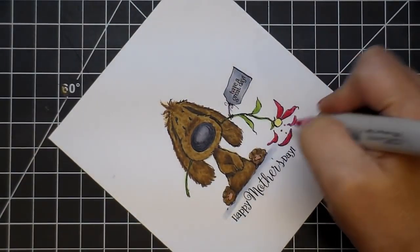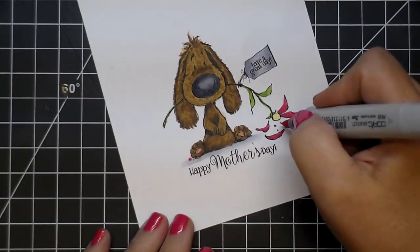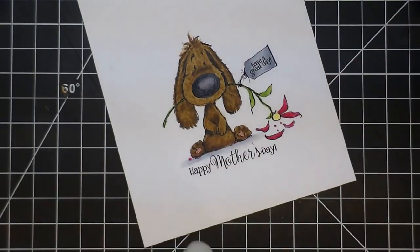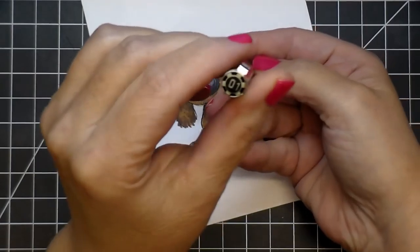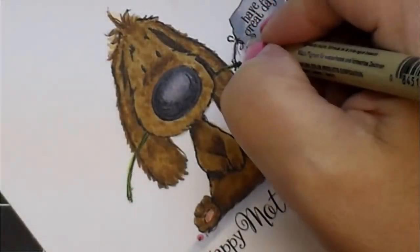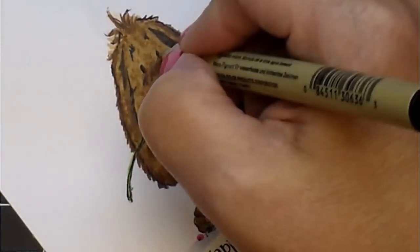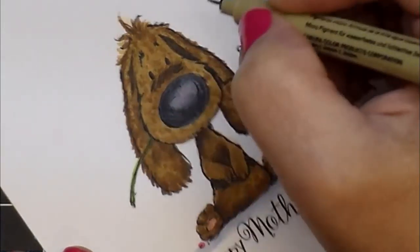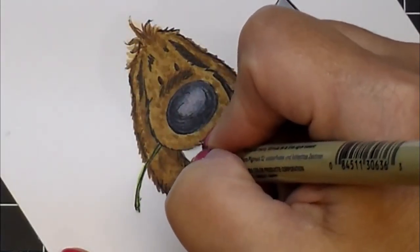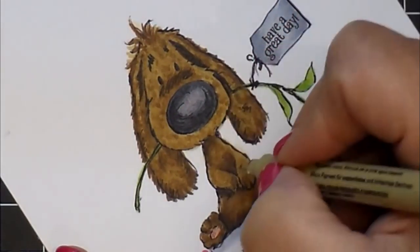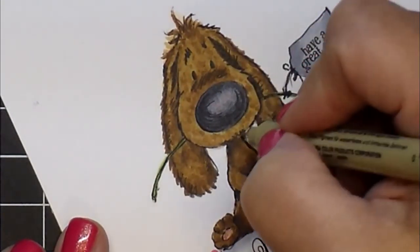I am coloring on Neenah Classic Crest Solar White 80 pound, and I printed this out on my inkjet printer. I have no problem with the ink running with my Copics. And here's where I introduce that Micron 01 pen and go back in. I'll give you a closer look here. Go back in and just go back over some of the lines that were drawn in by the illustrator and then adding a few of my own. I am darkening his eyes and his eyebrows. Like I said, I lost some of that detail when I blended out the markers, being that the image was so faint to begin with. So I'm just going back and adding it back in, giving this guy a little bit more character again.